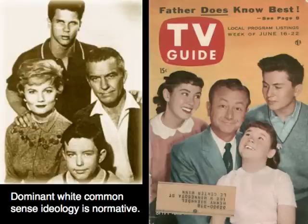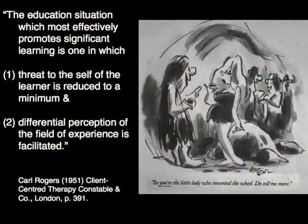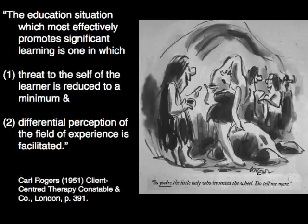In spite of the work of feminist philosophers and activists, in the United States, dominant white patriarchal ideology is normative. This picture shows two images from television shows popular in the 1960s that have left their mark on United States culture. They picture ideal families with the father in control — father knows best. This next picture shows a cave person cocktail party where a woman has admitted to inventing the wheel. Why is this so amusing? Is it impossible that a woman could have invented something so important to civilization?